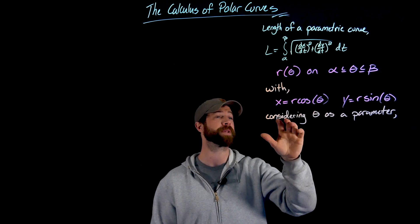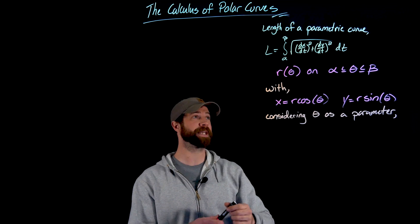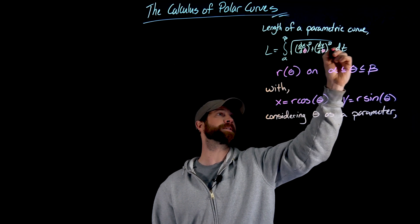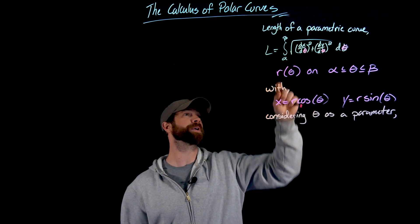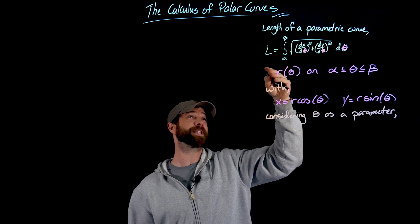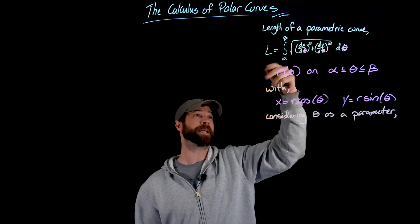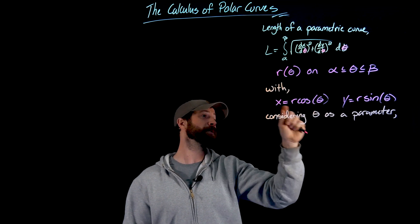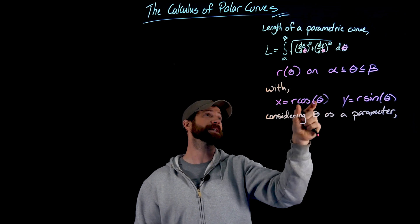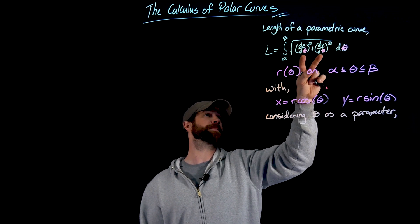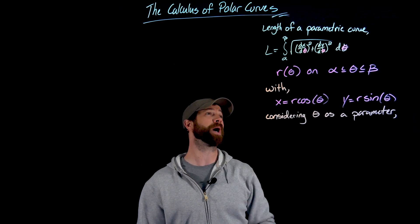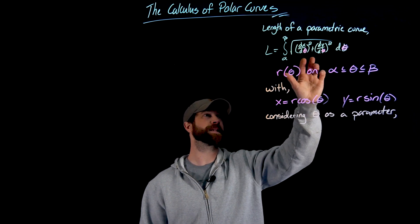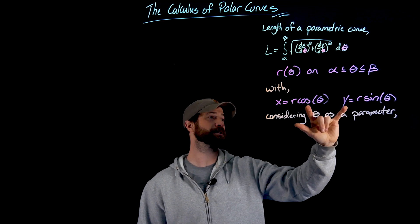Instead of thinking of t as a parameter, we just change everything to θ. We think about going from θ = alpha to θ = beta. With this setup, we replace dx/dt and dy/dt with dx/dθ and dy/dθ in the parametric arc length formula.